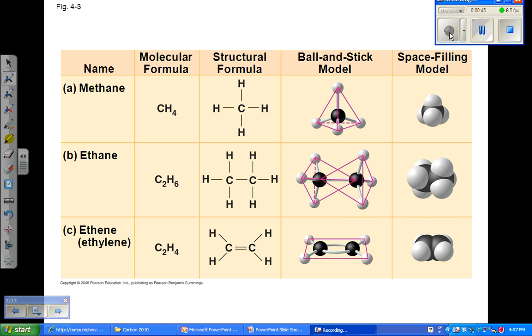This property of carbon, the ability to form four stable covalent bonds, is called tetravalence. That means that each carbon atom in a molecule can serve as an intersection point from which branching can occur in as many as four directions. The tetravalence of carbon is the key that makes carbon the foundation for large, complex biological molecules.